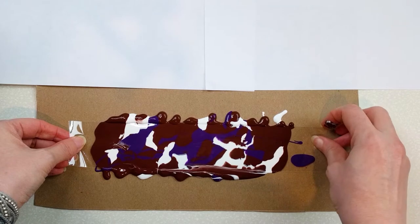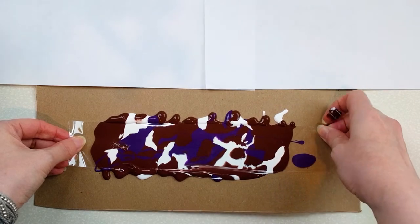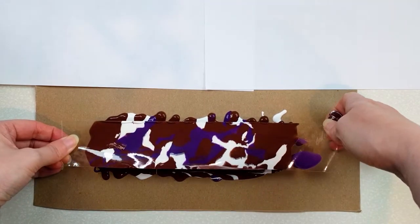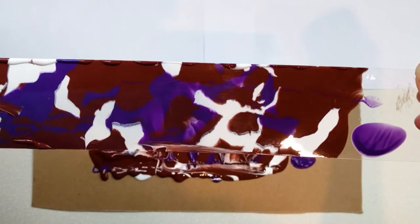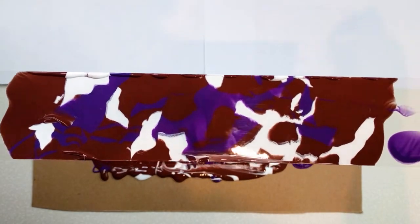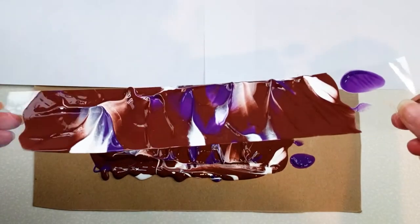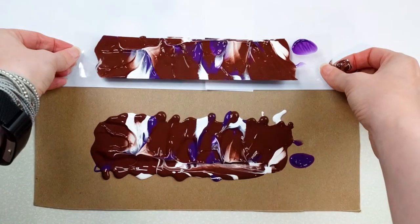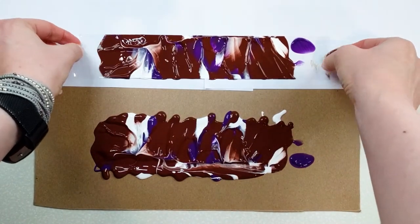And when you're done lift it off. It will stick sometimes so just pull. And there it is. So next step will be to dry it. And you'll want to put the shiny side down and leave the wet paint up. That way you can dry.